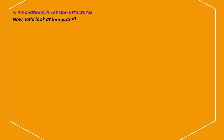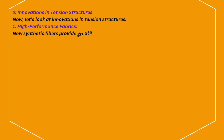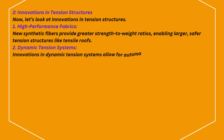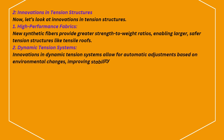Now let's look at innovations in tension structures. First, high-performance fabrics: new synthetic fibers provide greater strength-to-weight ratios, enabling larger, safer tension structures like tensile roofs. Second, dynamic tension systems: innovations allow for automatic adjustments based on environmental changes, improving stability in varying conditions.